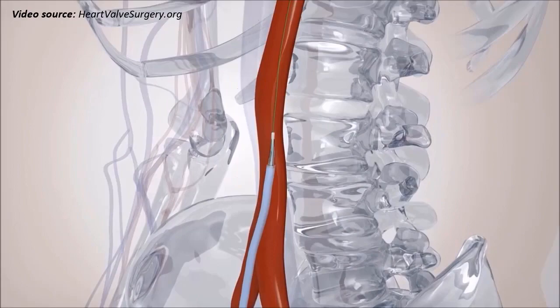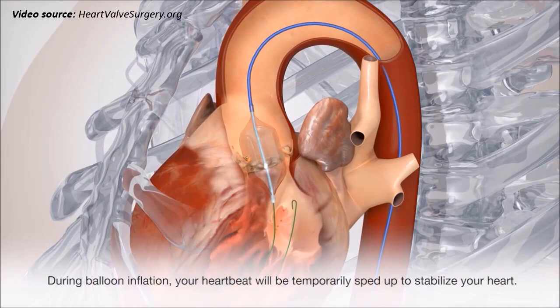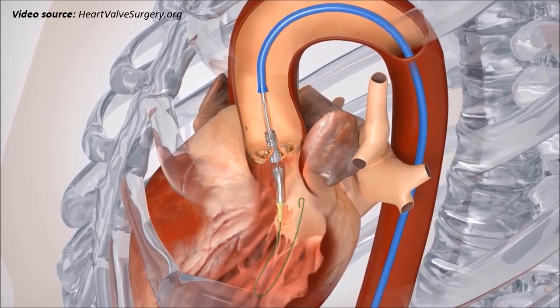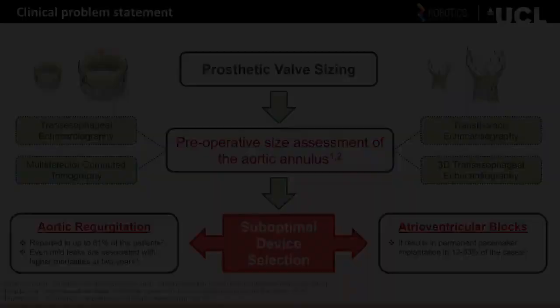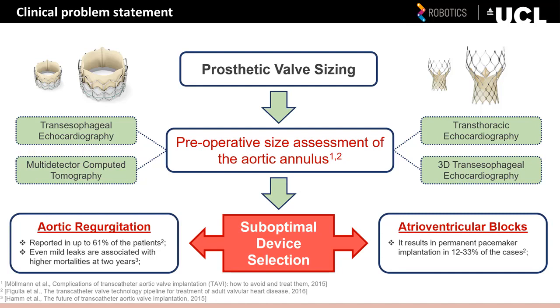The procedure can be divided into three steps. First, the native valve is dilated using a balloon catheter, which is called valvuloplasty. Then, a bioprosthetic valve is inserted through a catheter and implanted within the diseased native valve. The third step is the correct positioning of the device. Currently, prosthetic device selection is essentially based on preoperative size assessment of the aortic annulus, which very often leads to suboptimal device selection, resulting in major complications such as prosthetic valve leakages, reported in up to 61% of patients, or interruption of the cardiac electric signal, reported in about 12 to 33% of cases depending on prosthesis type.